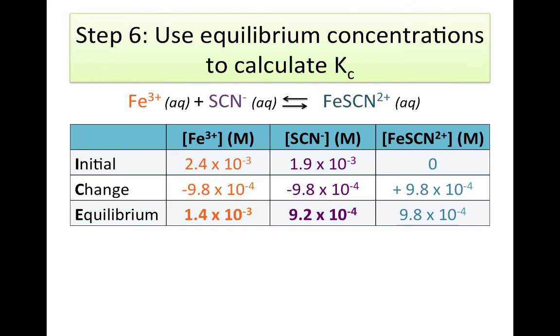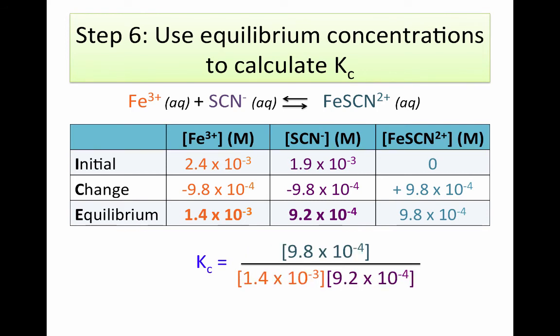We start by writing an expression for Kc. We have our product concentration on top, raised to the first power, and then our two reactant concentrations on the bottom. Now that we have an expression for the equilibrium constant, we take the numbers from our table and plug them directly into that expression. If you run it through your calculator, the answer we get is 760 — that is the equilibrium constant for this reaction.